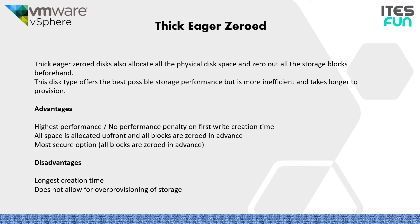Thick eager zeroed disks also allocate all the physical disk space but zero out all storage blocks beforehand. This disk type offers the best possible storage performance but is more inefficient and takes longer to provision. The advantages are highest performance and no performance penalty on first write, as all the space is allocated up front and all blocks are zeroed in advance to avoid latency — making it a more secure option. The disadvantages are the longest creation time and it does not allow for over-provisioning of storage; only thin provisioning can allow that.